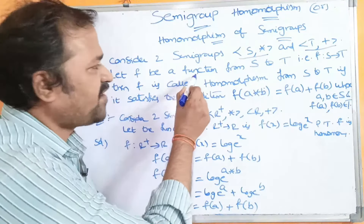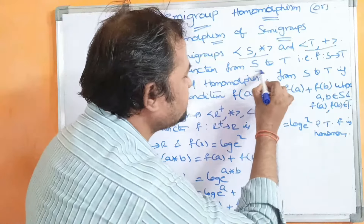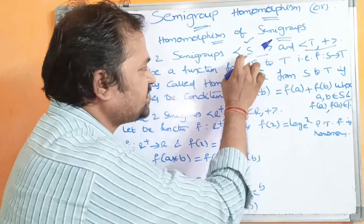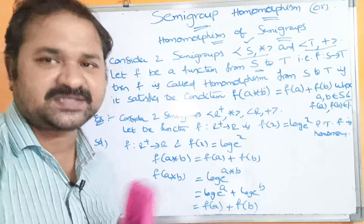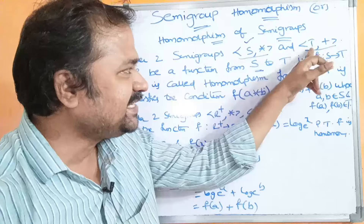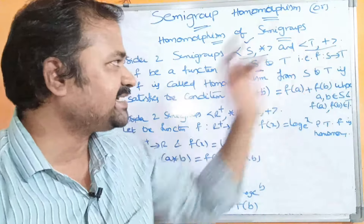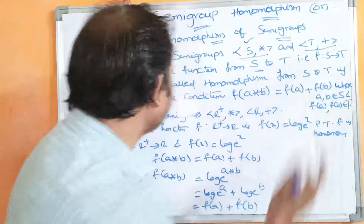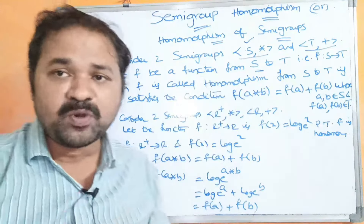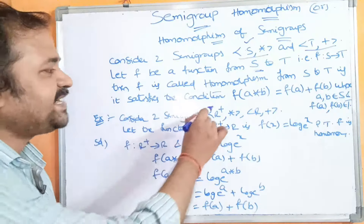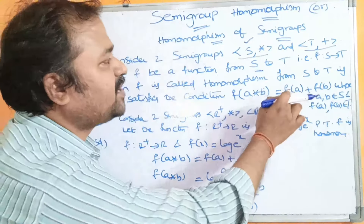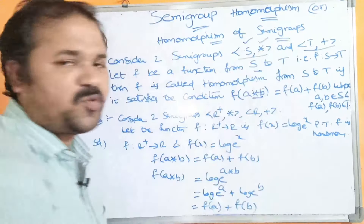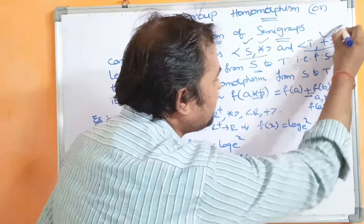Let F be a function from S to T. Here S is the set of semigroup one, and T is the set of semigroup two, with + as the binary operation on T. Then F is called a homomorphism from S to T if it satisfies the condition: F(a ★ b) = F(a) + F(b). Here ★ is the semigroup one operation and + is the semigroup two operation.